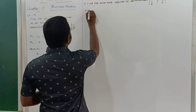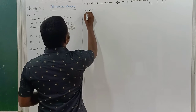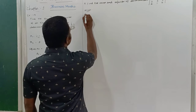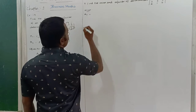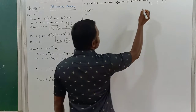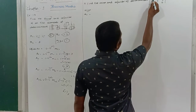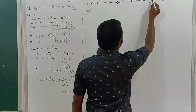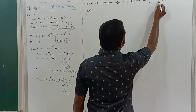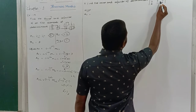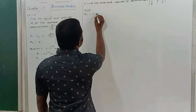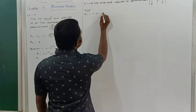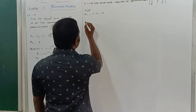Minor M11: first row, first column — element 3. I remove that row and column. The remaining 2×2 determinant gives 0 and minus 5, so M11 = minus 5.